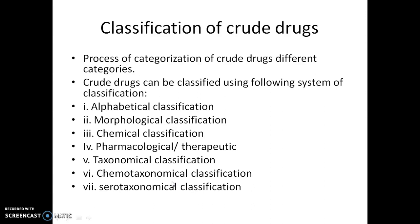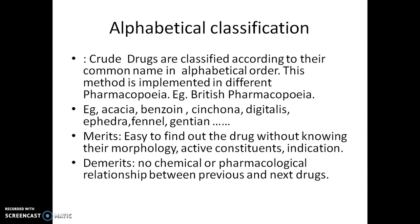These classifications are important for different purposes. Let's look at each classification individually. In alphabetical classification, crude drugs are classified according to their common name, either in English, Latin, or other languages, in alphabetical order. This method is simple and implemented in different pharmacopoeias like British Pharmacopoeia, Indian Pharmacopoeia, Ayurvedic Pharmacopoeia of India, herbal pharmacopoeia, or others.